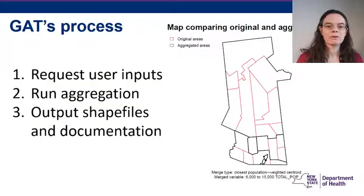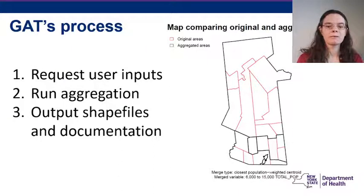GATT's process: GATT generates several maps, including the one shown, which it writes to a PDF. GATT also writes a log of the entire process, a settings file, and on request, a KML file. The PDF, settings file, and log are designed to help the user evaluate and report aggregation results. Last, GATT saves two shapefiles: a shapefile of aggregated areas and a crosswalk shapefile that adds aggregated area IDs as a new variable to the original shapefile.